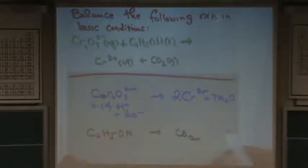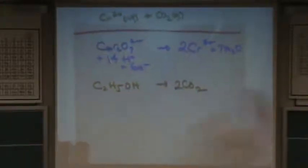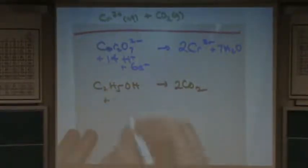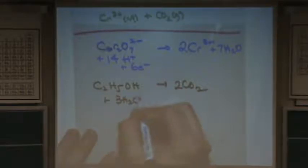First step, balance anything that's not hydrogen or oxygen. That's carbon. So two carbons on each side. You balance that by inspection. Second step, you balance the oxygen. So there's, let's see, four on the right and only one on the left. So I need to add three waters to have the same number of oxygens on each side. Third step, balance the hydrogen. There are zero hydrogens on the right and six plus six, 12. I got that right. So plus 12 H plus.